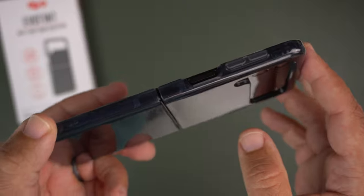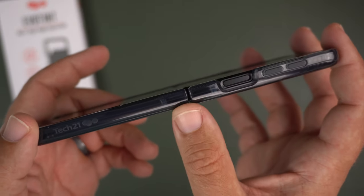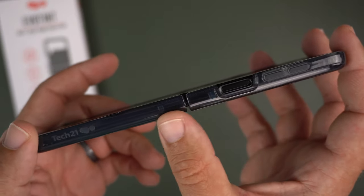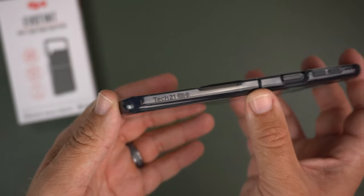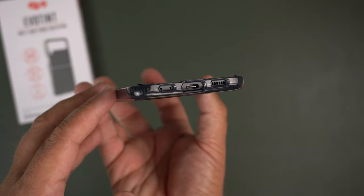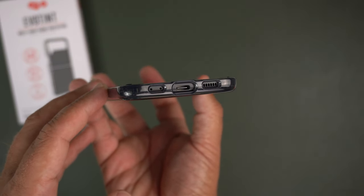We'll do the button test in a minute. You can still kind of see through since you can see the adhesive strip. You've got Tech 21 branding here, very minimal. At the bottom you have a nice cutout for the USB-C port, mics, and speaker grill.